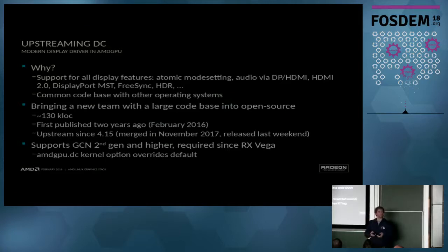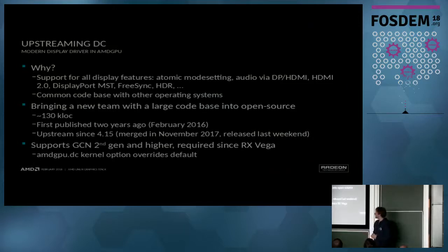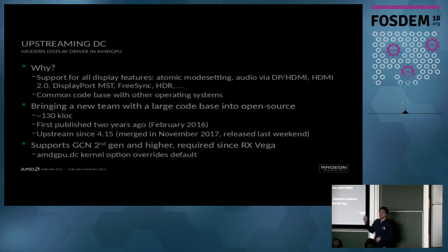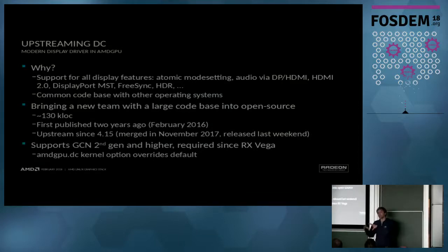If anybody has ever been in contact with such a project you know that's very difficult. It took longer than people at AMD hoped, but I think we're in a good place now — the display team has really arrived in the Linux kernel community. It was a challenge: it's a huge code base, around 130,000 lines of code. It was first published as cleaned-up open source basically two years ago and it took almost those two years to actually get it upstream. The new display driver supports almost all of GCN, but it's required since our very latest generation — the Vega generation. At the time Vega released there was open-source support for Vega, but it wasn't upstream yet. Now everything is upstream and going forward it will all be upstream.